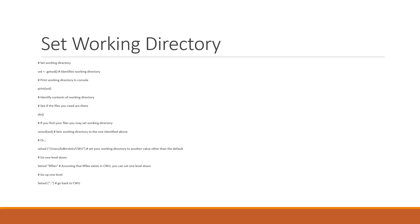We can also look at what's in the working directory. There's a function called dir() that will show you the contents of your working directory. If you can't find your files there, you can set a working directory using setwd(). You can pass it a specific path — for example, setwd("/users/kdkirstein/cwu") — and that becomes your working directory. When you do a load command, R will look there instead of the default working directory.